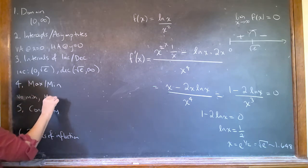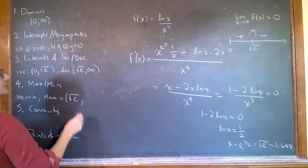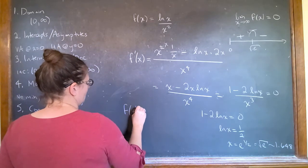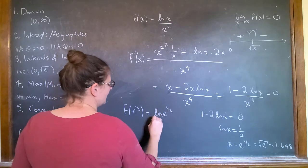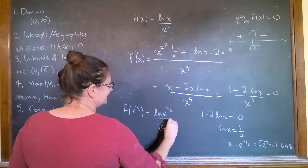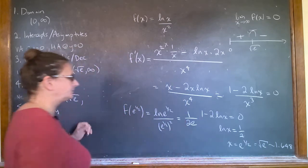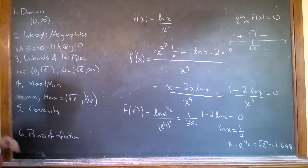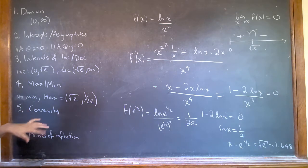And then my maximum value is at square root of e. And what the heck would that be if I put this in? F of e to the one half is natural log of e to the one half over e to the one half squared. So this is one over two e. We'll figure out what that is in a minute. So that's my maximum point.